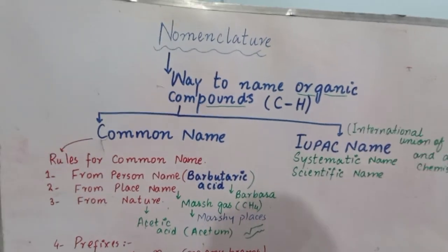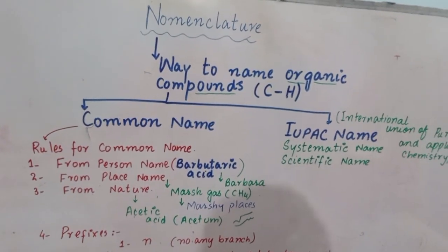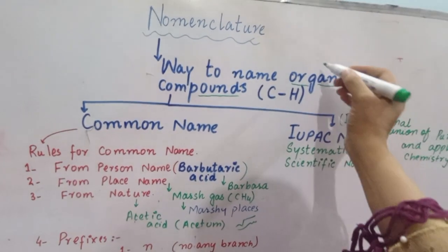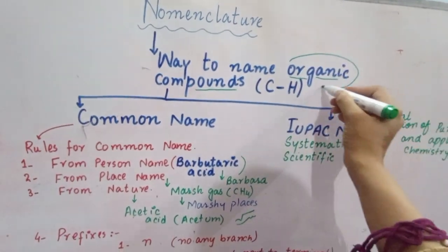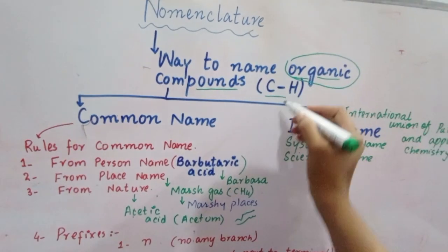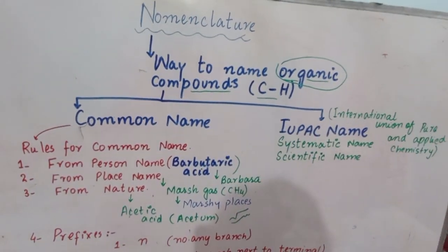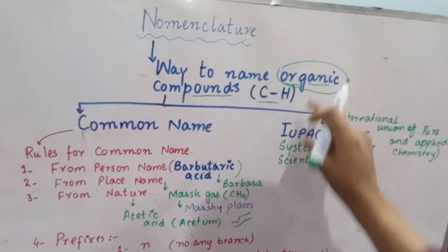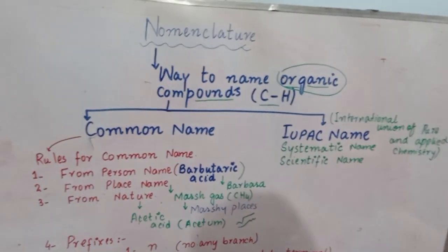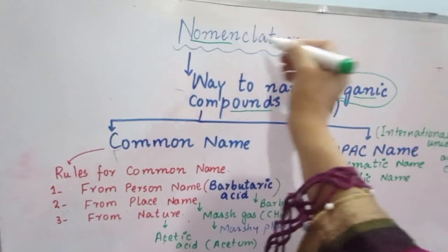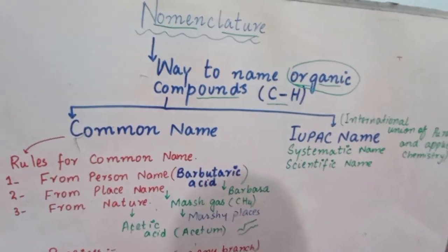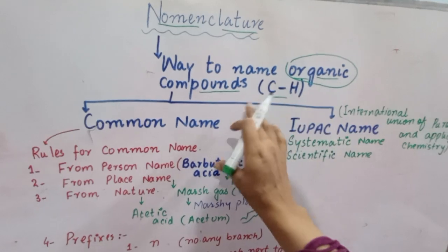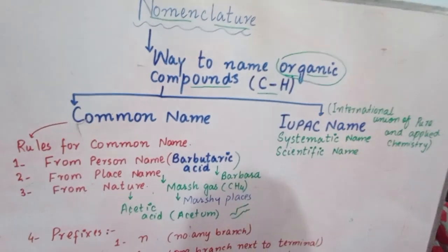Assalamualaikum students, today we have organic compounds nomenclature. Organic compounds are carbon and hydrogen - the compounds having carbon and hydrogen are called organic compounds. Nomenclature means how we are going to name the organic compounds. The way to name the organic compounds is basically known as nomenclature.